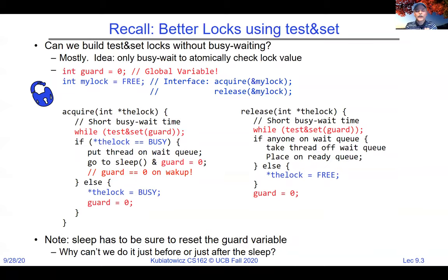We gave an interface of acquire and release where you give the address of the lock. Acquire uses test-and-set in a spin loop until it finds the guard is zero. We grab the value of guard and store one there atomically. We can quickly grab the guard lock, check whether the lock is busy, and if not, set it busy and return from acquire. If it is busy, we put the thread on a wait queue and go to sleep. Release is the opposite — if anybody's on the wait queue, we give the lock to them; otherwise we free it.